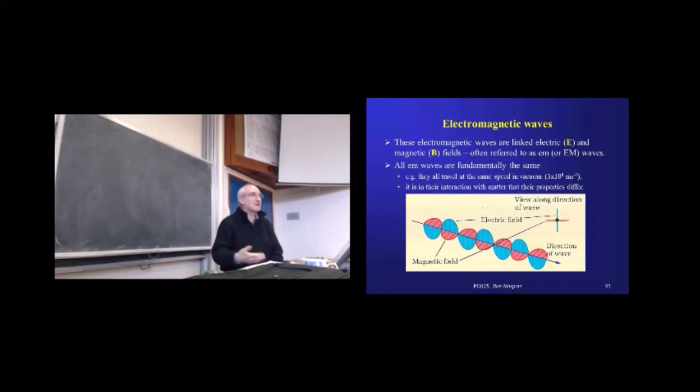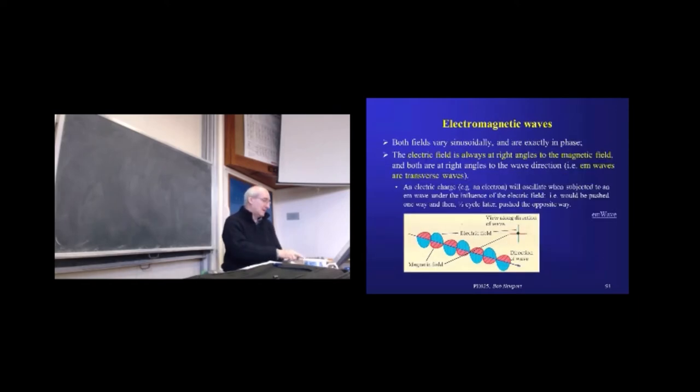The way we split them up comes entirely empirically. It comes from how we generate them, how we detect them. Different parts of the EM spectrum were studied over time, historically, depending on how instrumentation and devices were developed and improved. And that's a lot of where the labeling comes from.